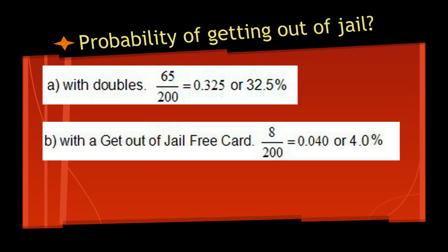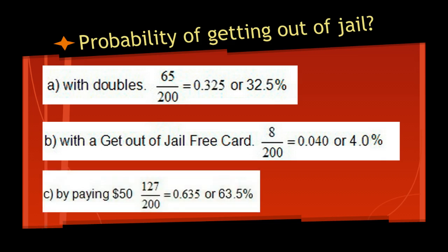If he gets a get out of jail free card, he gets out 8 times out of 200, or about 4% of the time — that's 1 in 25 times. And then the remaining 63.5% of the time — 127 out of 200 — he pays $50. In case you're wondering, that's not 50 real dollars, that is 50 Monopoly dollars.